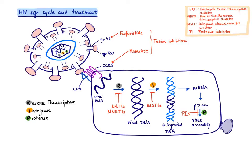We can prevent viral fusion with two drugs. Enfuvirtide binds to GP41, which is close to GP120, blocking the conformational change needed for fusion. Maraviroc binds to CCR5, the co-receptor, also inhibiting fusion. Importantly, some HIV strains use CCR5 while others use CXCR4 as their co-receptor, so patients must be screened for their virus type before using maraviroc.